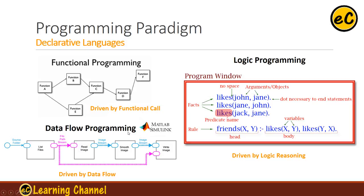The second one is dataflow programming. It is used in MATLAB Simulink in the programming environment. You can think about an image processing pipeline — it will source the image, read in different files and images, do some processing, and eventually write out the image. So the dataflow goes from left to right, or you can read some file and write it directly out. The program basically flows from the data source to the data sink, and you have an environment to facilitate such a dataflow. That's the second programming paradigm.